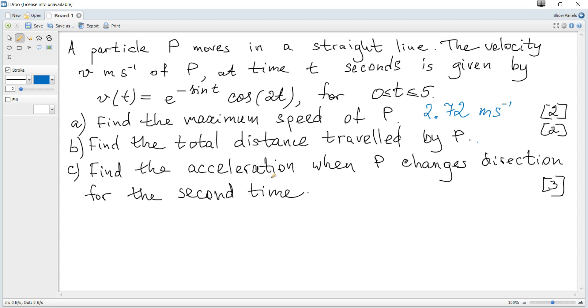The next question: find the total distance traveled by P. The formula for total distance traveled is given in the data booklet, and it's the integral from zero to five of the absolute value of V(t) dt.